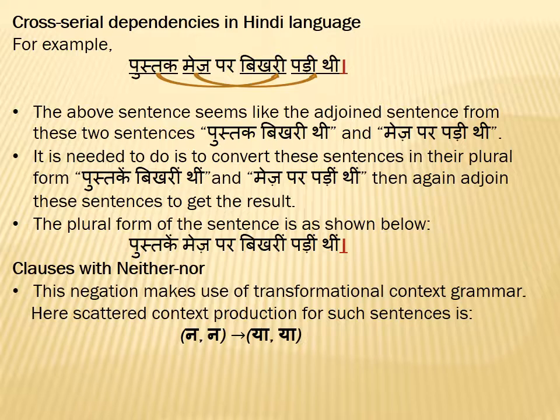Hindi sentences also make use of clauses with neither or nor. For this we need to use transformational context grammar, which is a step higher version of scattered context grammar. Suppose we have a sentence like 'main na hindi sekhun ga na english.' This can be converted into 'main yaa hindi sekhun ga yaa english.' So the scattered context production for such sentences is (na, na) → (yaa, yaa).